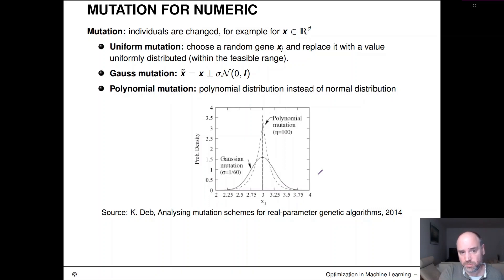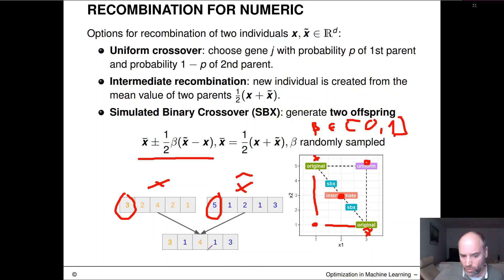And how does mutation look like? Again, there's a simple form of uniform mutation that chooses random gene x_i, x_j and replaces it with a value, usually uniformly distributed from the feasible range. So maybe these values here, they are all between 0 and 10.